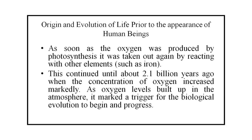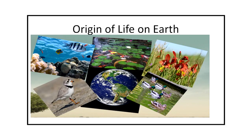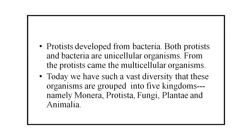Now we come to the origin and evolution of life on Earth. As soon as oxygen was produced by photosynthesis, it was taken up again by reacting with other elements. This continued until about 2.1 billion years ago when the concentration of oxygen increased markedly. As oxygen levels built up in the atmosphere, it marked the trigger for biological evolution to begin. Protists developed from bacteria — both are unicellular organisms. From the protists came the multicellular organisms. Today we have such a vast biodiversity that these organisms are grouped into five kingdoms: Monera, Protista, Fungi, Plantae, and Animalia.